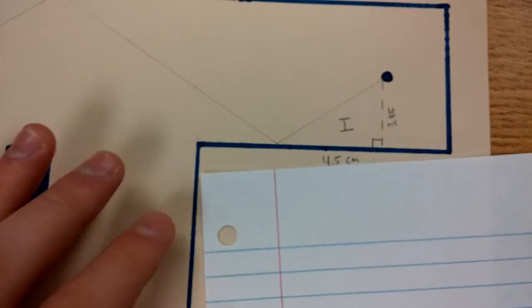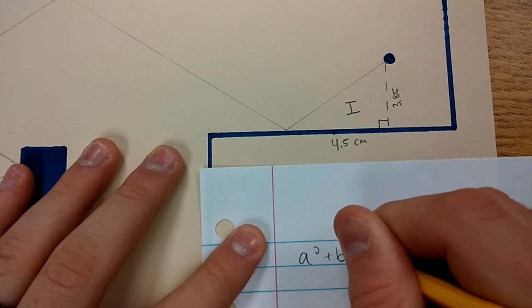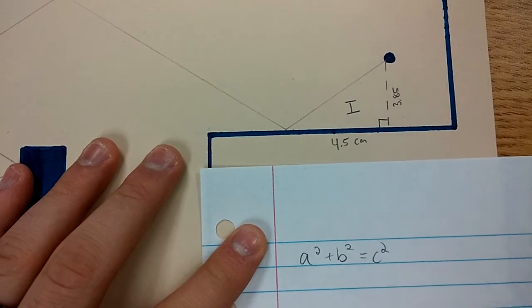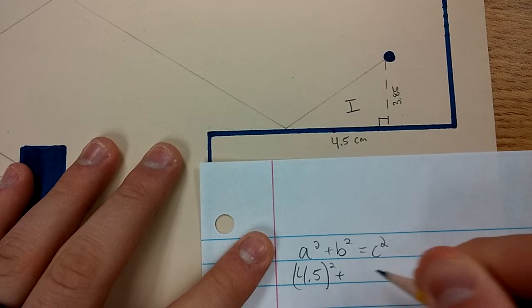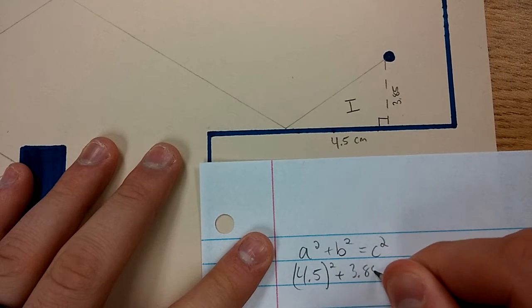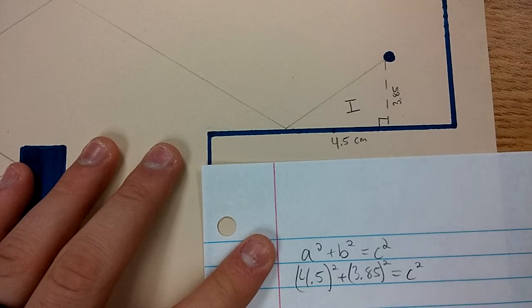We're going to do some scratch work here. a² + b² = c² is our Pythagorean theorem. We'll call 4.5 a, we'll call 3.85 b, and c is what we're looking for.